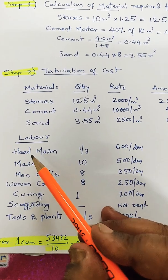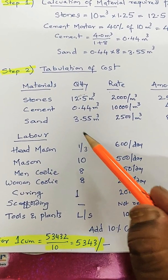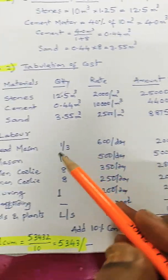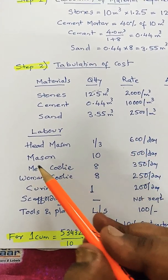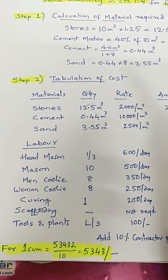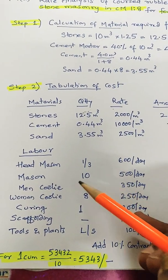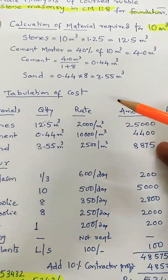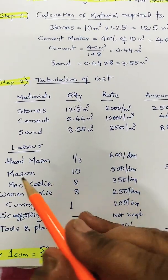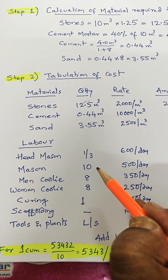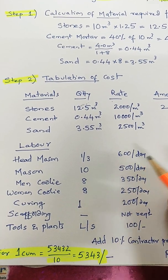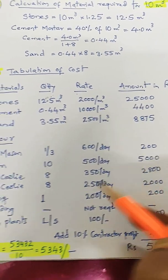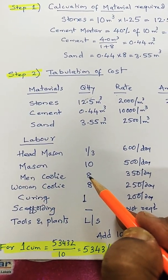Labor required: Head machine — one-third of a day at ₹600 per day, so ₹200. Masonry workers — 10 numbers required; remember this is foundation, so fewer masons are needed. For superstructure, increase masons to 12 while all other materials remain the same. Here we need 10 masons at ₹500 per day, totaling ₹5,000.